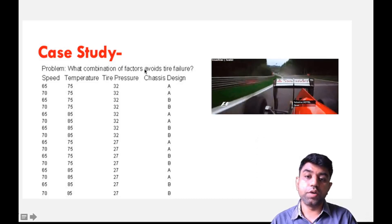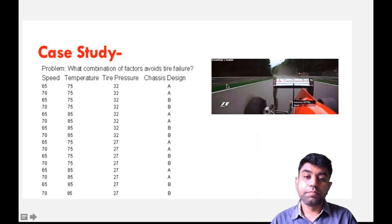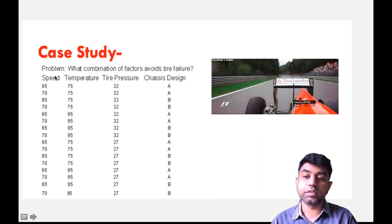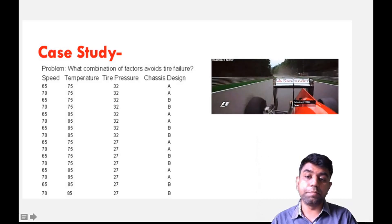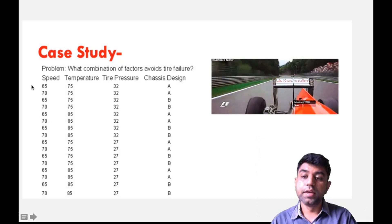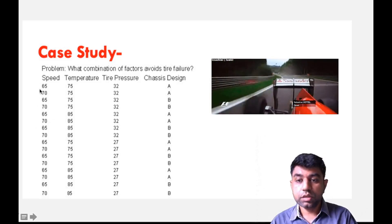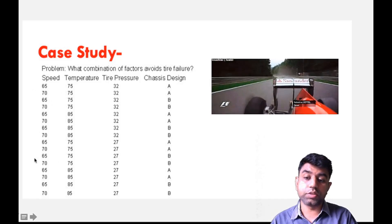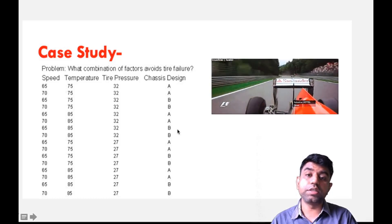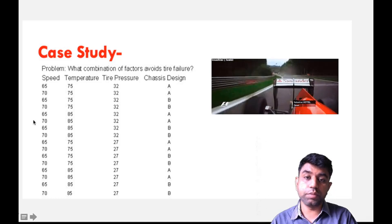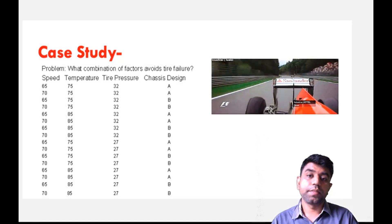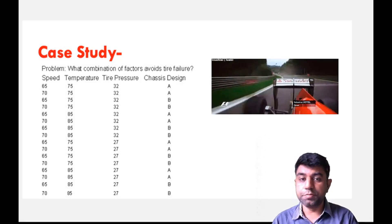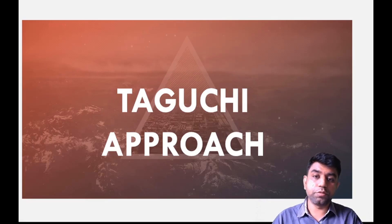Let's say we want to determine which combination of factors avoids tire failure. Tire failure depends on different parameters such as the speed of the car, the temperature at the tire side, the pressure of the tire, and the chassis design. According to the different variations we need to carry out almost 16 experiments — if all 16 are carried out that is the full factorial method. But if within 8 experiments you can also evaluate the scenario, then it is called the fractional factorial design.